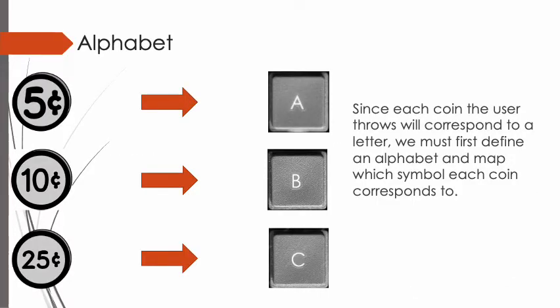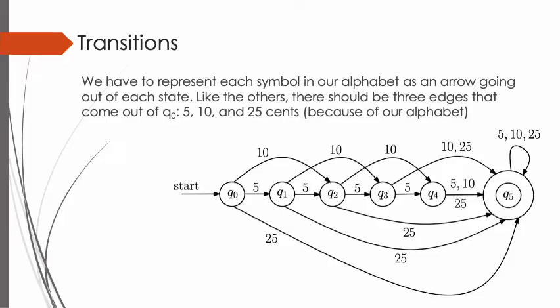Second, we need an alphabet. Since each coin the user throws will correspond to a letter, we must first define an alphabet and map which symbol each coin corresponds to. Third, we need to describe transitions among the defined states. It's easier to plan transitions once you've identified the tasks of the states. Since we're going to write a deterministic program, we have to represent each symbol in our alphabet as an arrow going out of each state — we call these arrows edges in graph theory. There should be 3 edges coming out of Q0: 5 cents, 10 cents, and 25 cents.